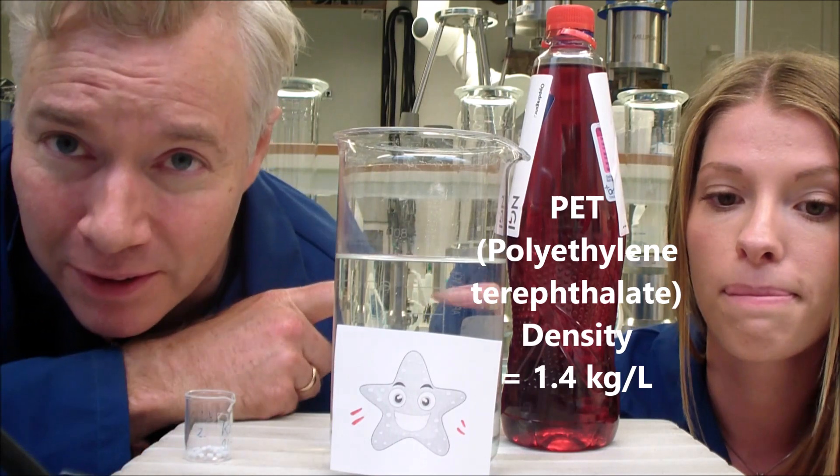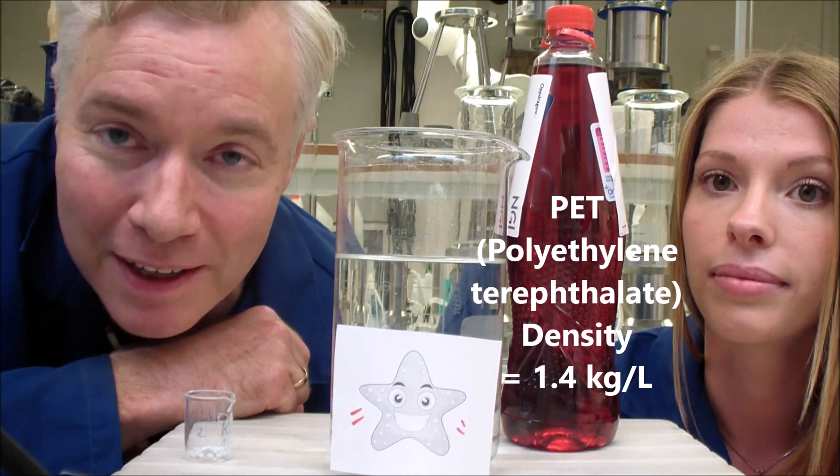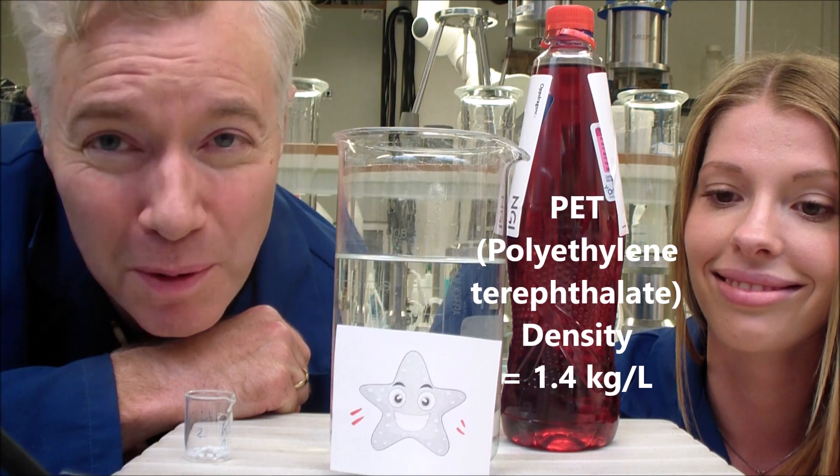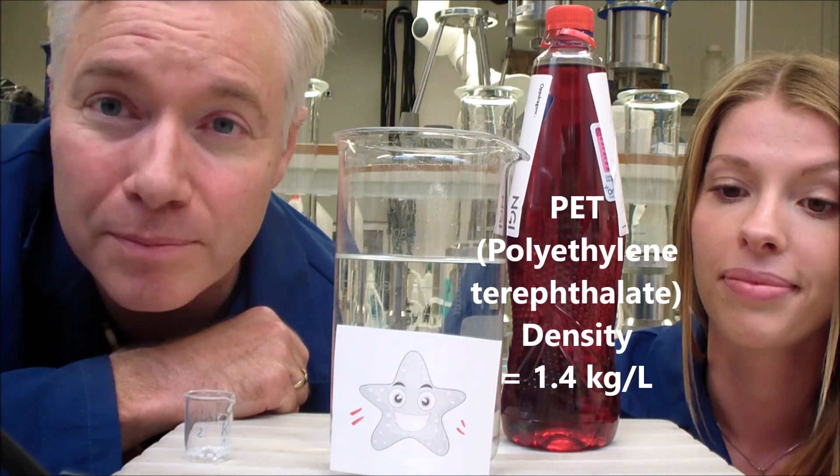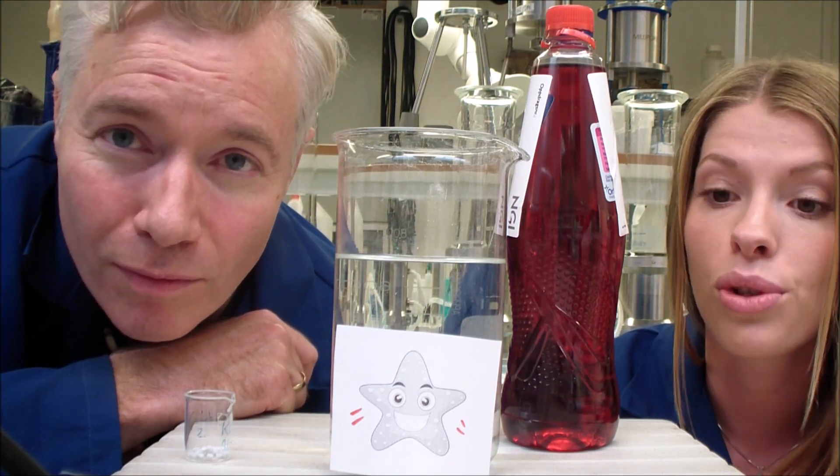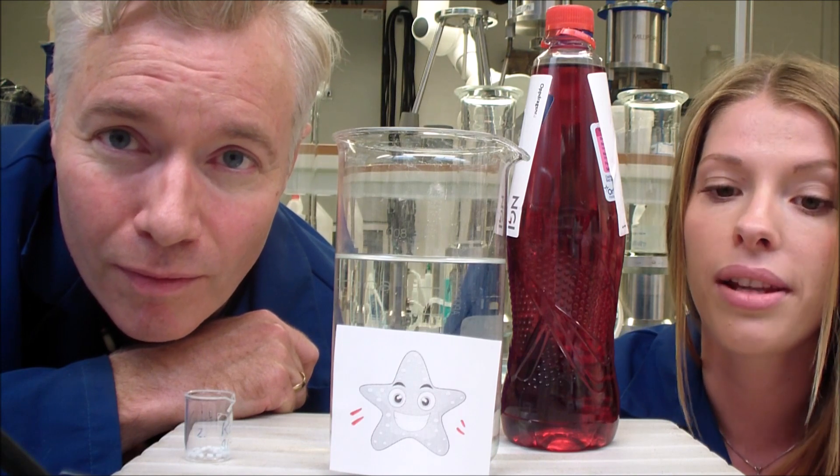Now, PET bottles, or bottles like this, are made out of a plastic called PET. It has a density of 1.4, more than water. This means that if you throw a bottle off a boat, then it will end up at the sea floor where it goes to all the critters that live there.